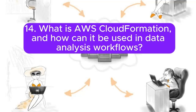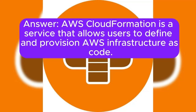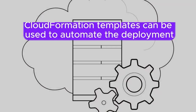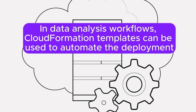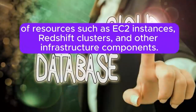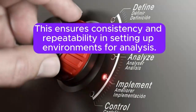14. What is AWS CloudFormation, and how can it be used in data analysis workflows? Answer: AWS CloudFormation is a service that allows users to define and provision AWS infrastructure as code. In data analysis workflows, CloudFormation templates can be used to automate the deployment of resources such as EC2 instances, Redshift clusters, and other infrastructure components. This ensures consistency and repeatability in setting up environments for analysis.